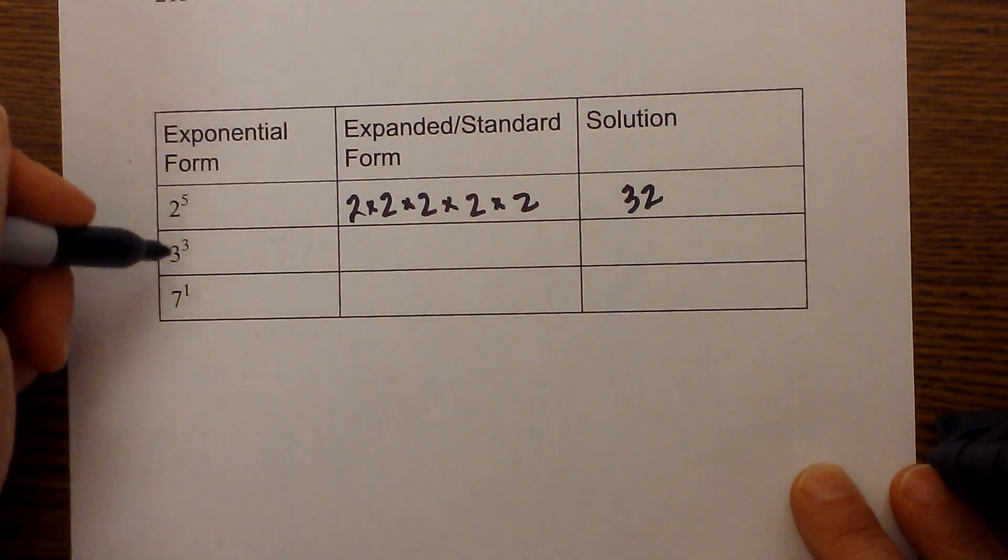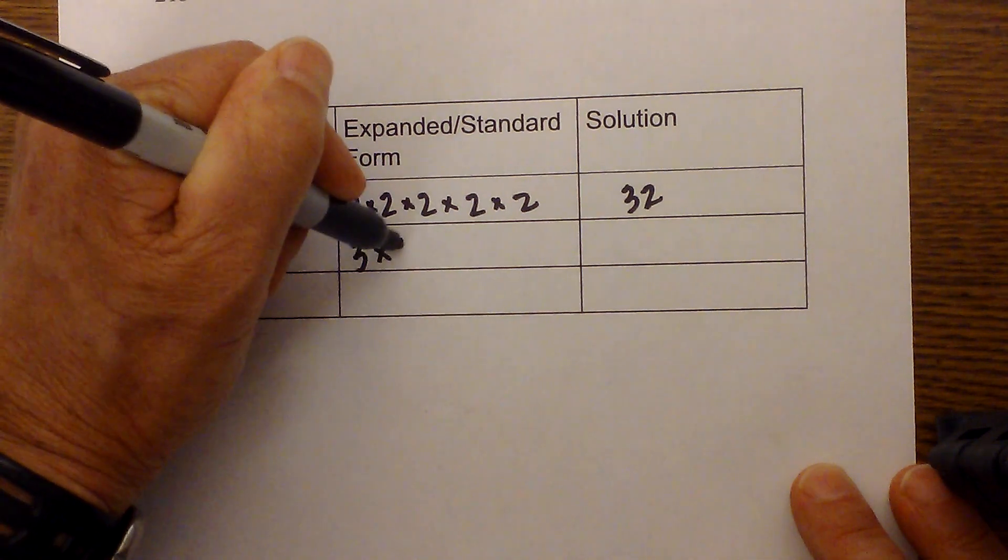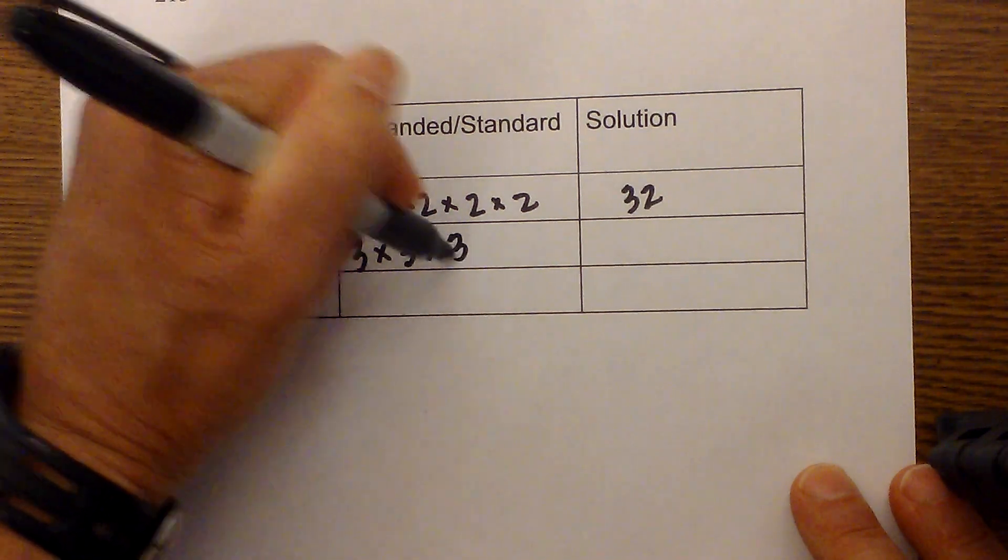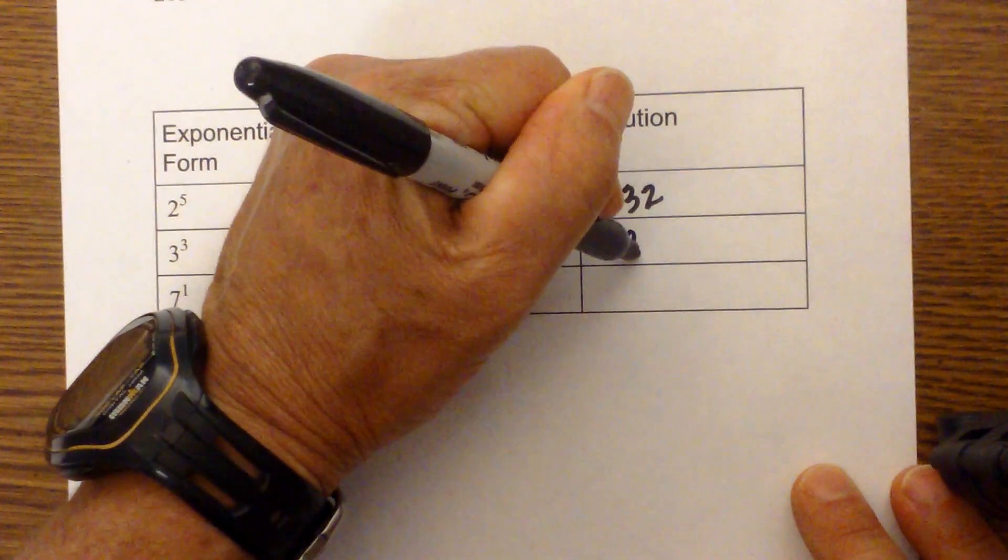Next would be 3 cubed, or 3 to the 3rd power. And so it would be 3 times 3 times 3, which is 9 times 3 is 27.